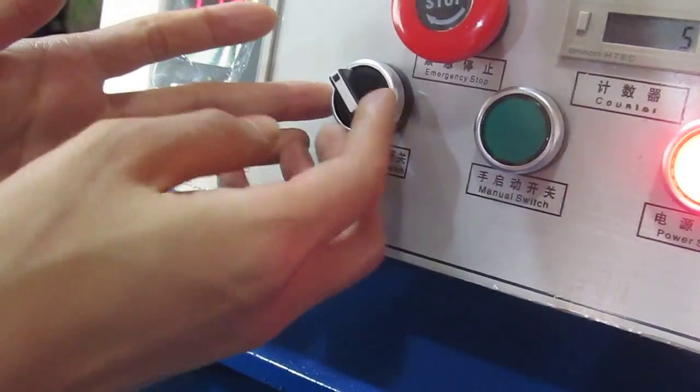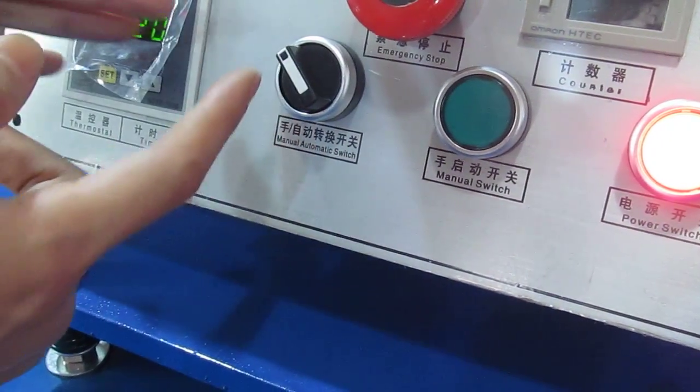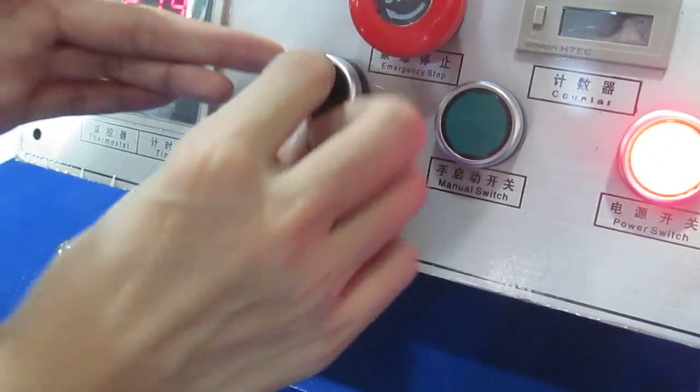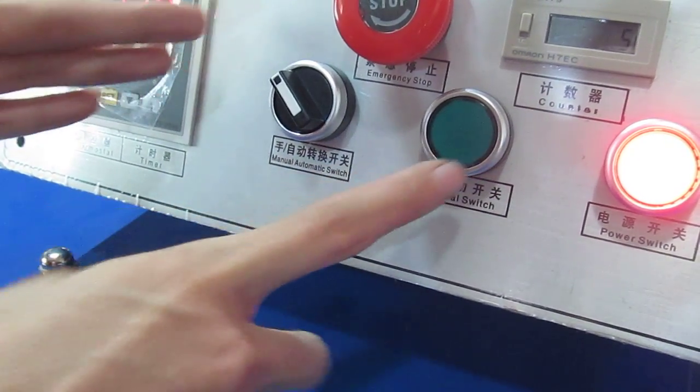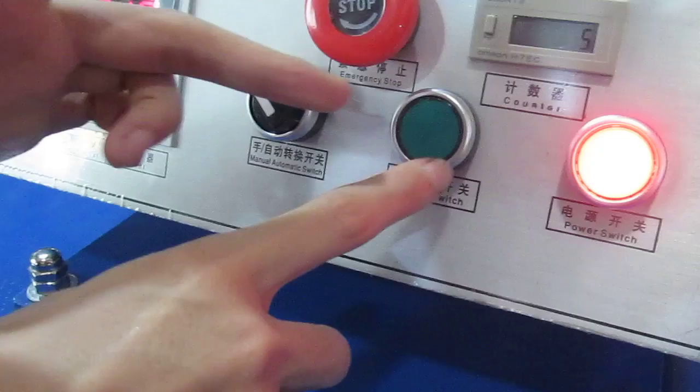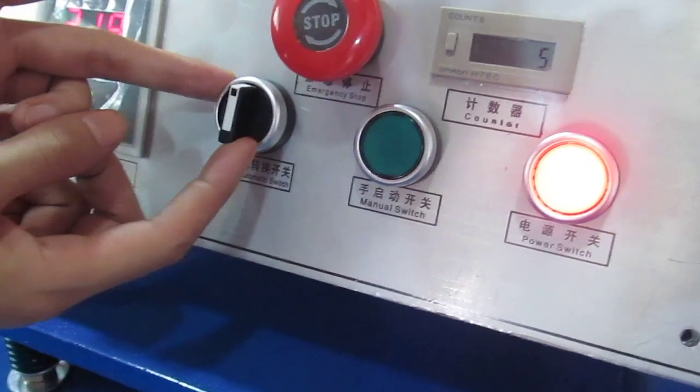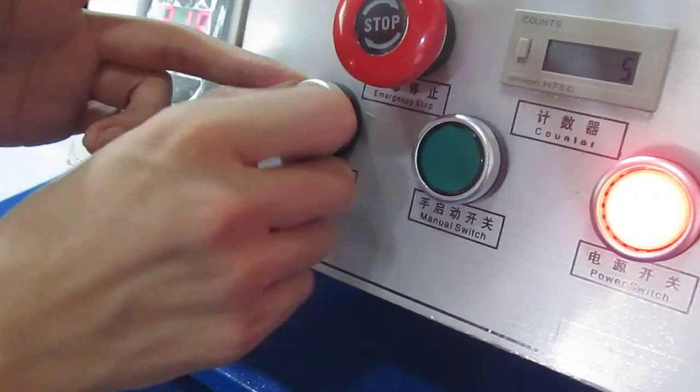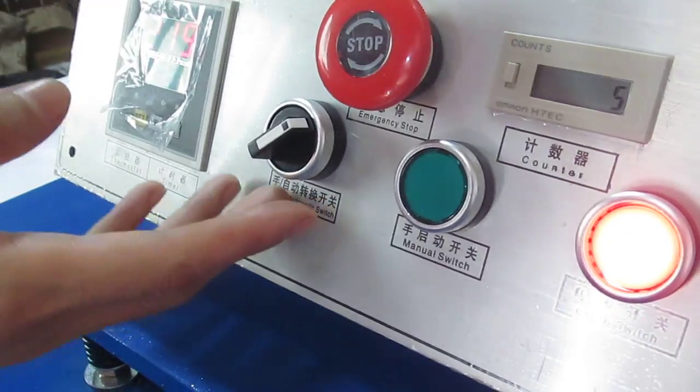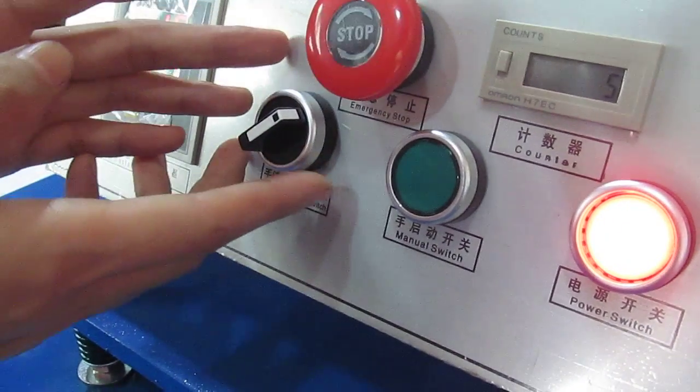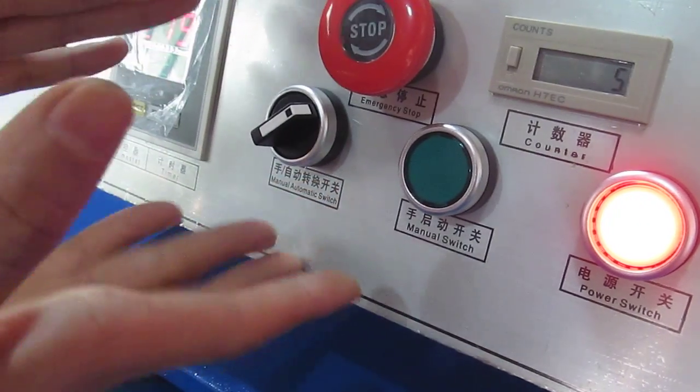This is the manual automatic switch. Once it turns to the left hand, the machine becomes manual mode. And then, you can have to press this button to press down the machine. And if this button becomes middle, the machine won't work. If the machine becomes this, the right hand, the machine becomes automatic mode. And the machine will press down once the bottom working plate reach to the right position.